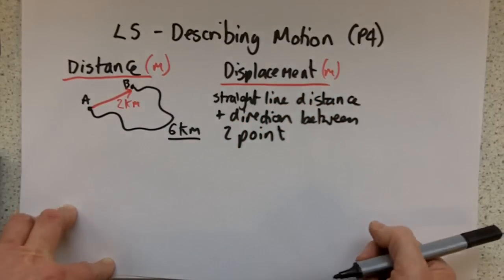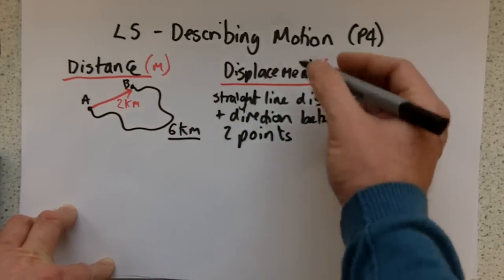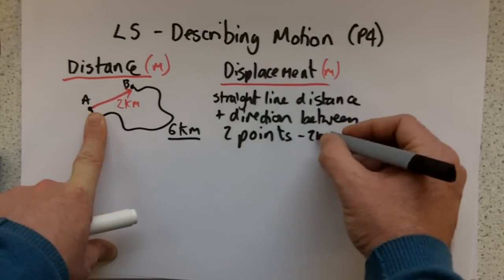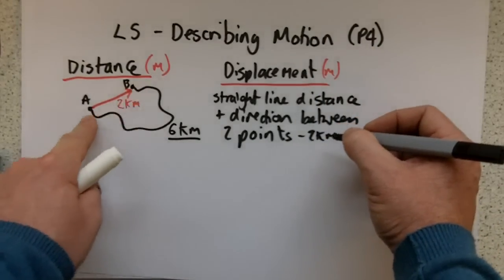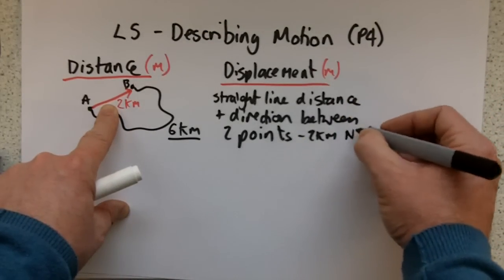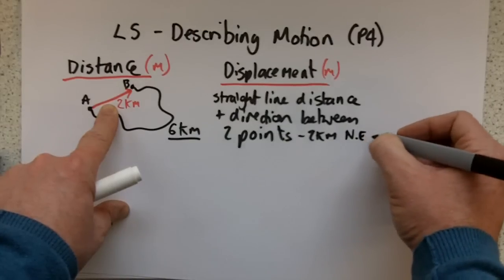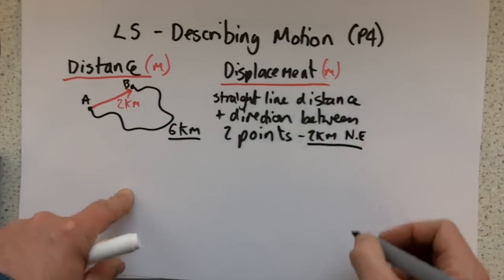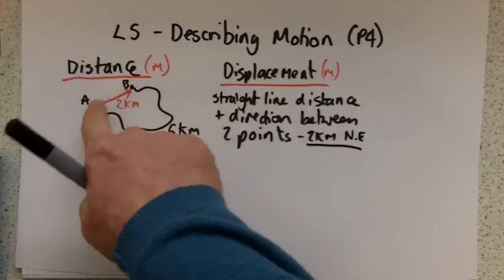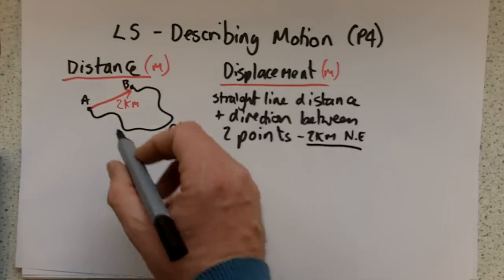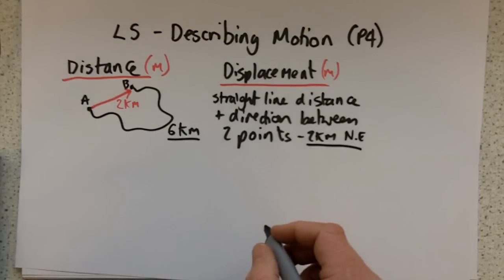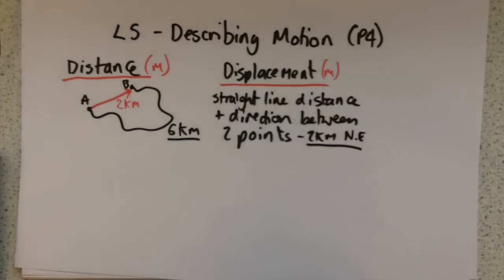The thing about displacement is that it also includes a direction. So the displacement here would be two kilometres, and the direction is roughly north-east. Displacement normally includes direction, but it's also a distance — specifically the straight line distance between two points. Whereas the distance is the total amount of distance covered. That's distance versus displacement.